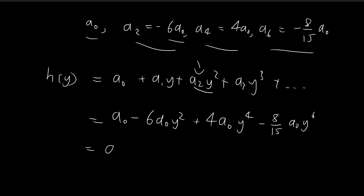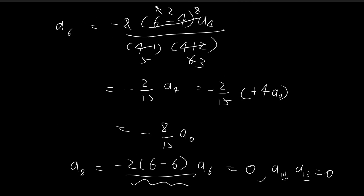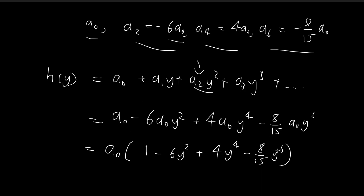We're very close to deriving the Hermite polynomial. Recall the clue that the coefficient of the highest power of y must be 2 to the power of N. Here we're dealing with the Hermite polynomial for N equal to 6, so the coefficient of y to the power of 6 should be 2 to the power of 6, which equals 64. We need to manipulate the expression so that this term has a coefficient of 64.